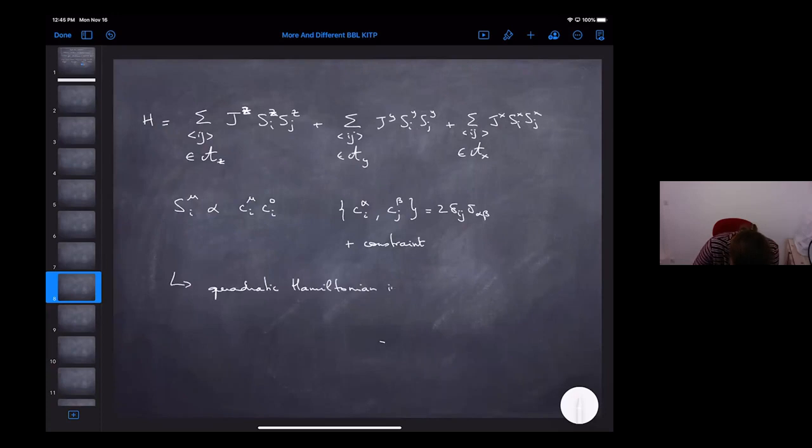Because this is a redundant representation, there is a constraint, so I won't write it down here. But there's an extra constraint so that you match the Hilbert space that you are spanning with your Majorana fermions to the Hilbert space that you span with the spin operator. Actually, with this rewriting you get a quadratic Hamiltonian in Majoranas.